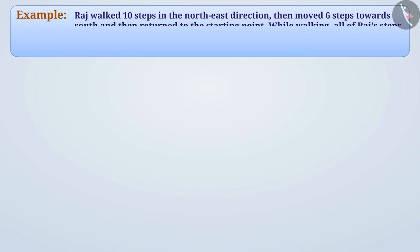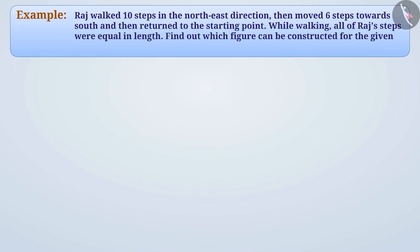Raj walked 10 steps in the northeast direction, then moved 6 steps towards the south, and then returned to the starting point. All of Raj's steps were equal in length. Find out which figure can be constructed for the given situation.